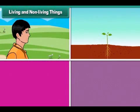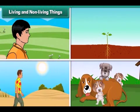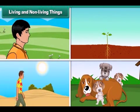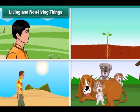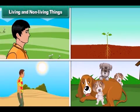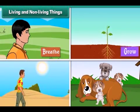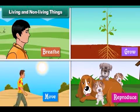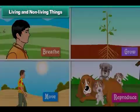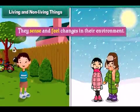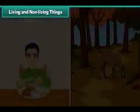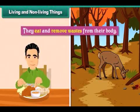Living and non-living things. Living things display the following characteristics: they breathe, they grow, they move, they reproduce, they sense and feel changes in their environment, and they eat and remove wastes from their body.